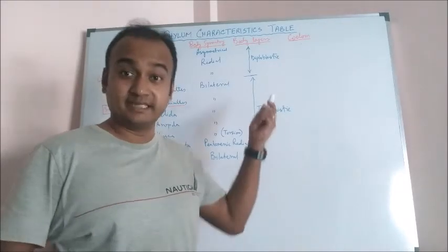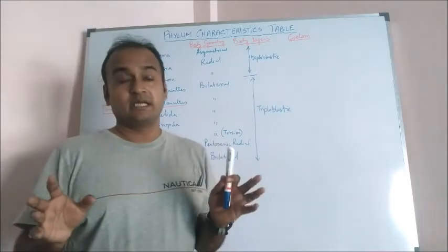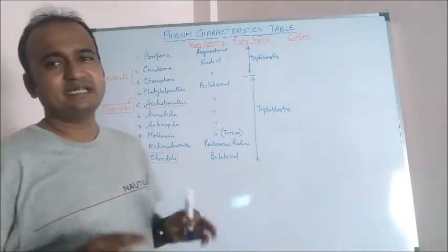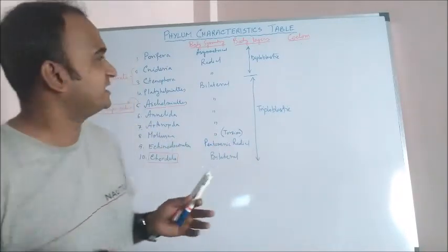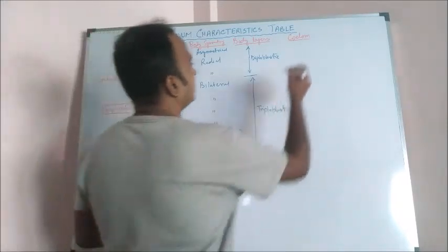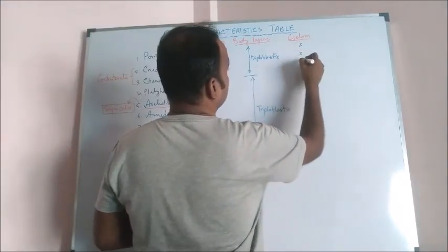Next characteristics: coelom, coelom means body cavity. So if there are two body layers, that is diploblastic animal, there is no question of body cavity. So Porifera, Cnidaria, and Ctenophora, there is no question of coelom.